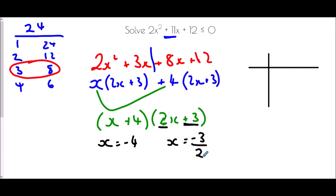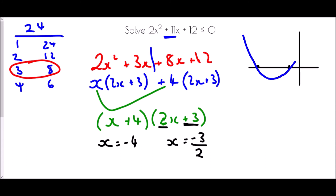In terms of our graph, the two crossing points are at negative 4 and negative 1.5. Drawing the curve, we were looking for points where it was less than or equal to 0 — that means the two values in between. So the solution is that x is greater than or equal to negative 4 and less than or equal to negative 3 over 2.